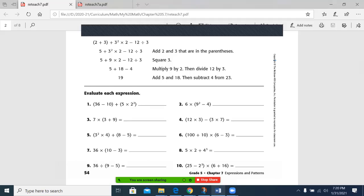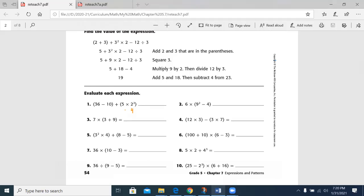So we have 36 minus 10 plus 5 times 2 squared. And in this case, I'm going to go ahead and make 2 squared 4. So I have 5 times 4. And 36 minus 10 is 26. So now I'm going to have 26 plus 20, 46.